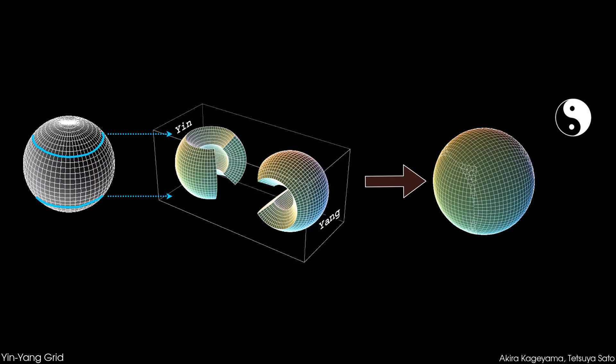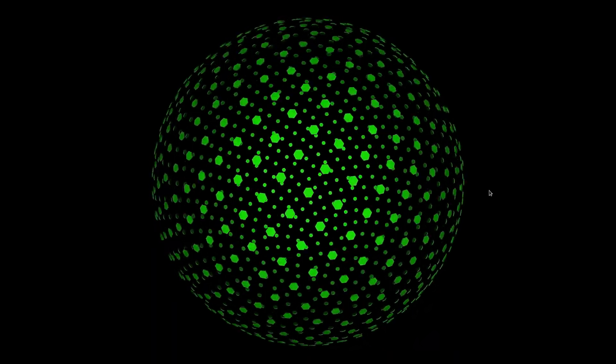There are still some very promising sphere grids. This yin-yang grid, for instance, can be used for simulations. And this Fibonacci sphere looks almost perfectly tessellated. But no matter how hard you try, there's always going to be some distortion.